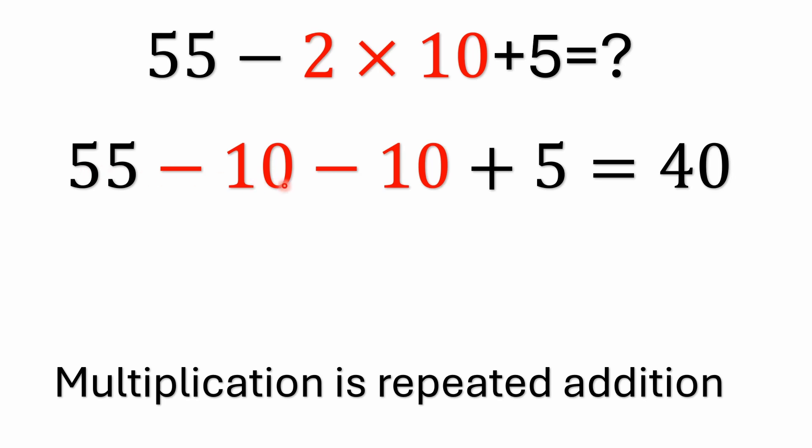It's 55 minus 10 is 45. 45 minus 10 is 35. 35 plus 5 is 40. Multiplication is repeated addition. Just remember multiplication has precedence over addition and subtraction.